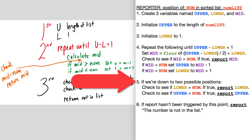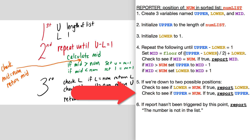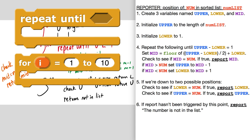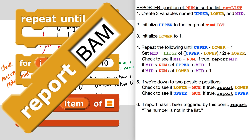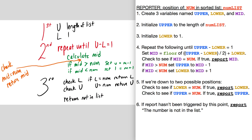If we get down to two possible positions, we're going to check the lower one and see if that equals the number, then check the upper. If at any point we report the position we've found, everything below that point doesn't run. A couple of videos ago I explained how report blocks can get us out of loops — out of the repeat-until or the for block. If we reach step six and the report hasn't been triggered, that means the number is not in the list, so we report back that the number is not in the list.